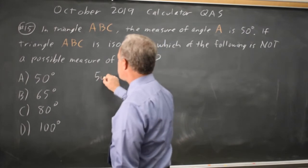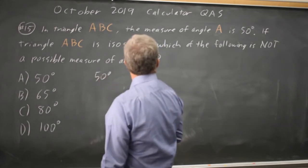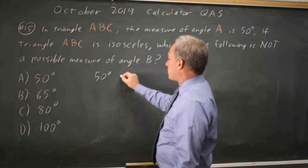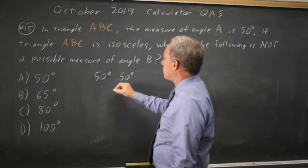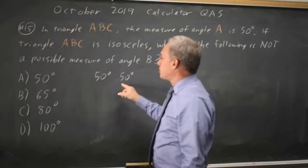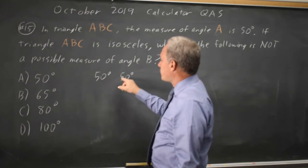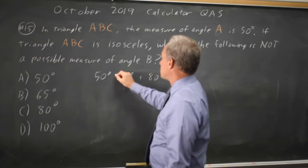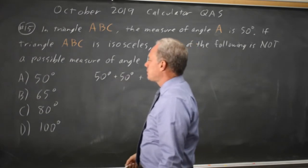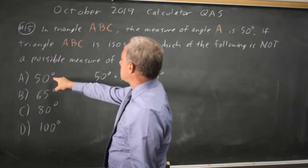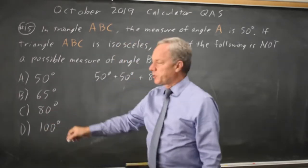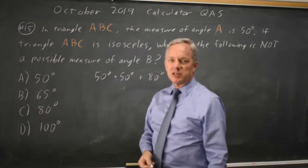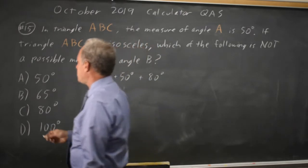So if one angle is 50 degrees, then a second angle could be equal because two angles are equal, and then to add up to 180, you have 50 plus 50 is 100, and the third has to be 80 degrees. So it's possible for angle B to be 50 or for angle B to be 80 because then the third angle is the other one of 50 or 80.